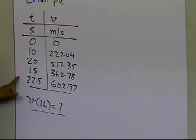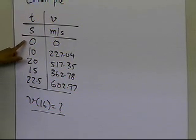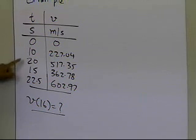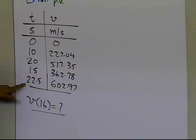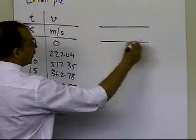The first thing which you've got to realize is that the time data which is here, or the velocity versus time data, the time data is not in ascending or descending order, because you've got 0, 10, 20, and then you've got 15, and then you've got 22.5. So what we have to do is we have to rewrite this particular data.